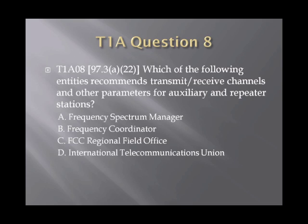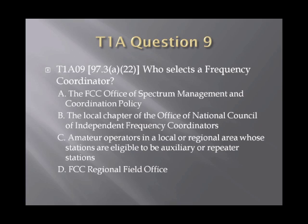Question 8. Which of the following entities recommends transmit-receive channels and other parameters for auxiliary and repeater stations? A. Frequency spectrum manager. B. Frequency coordinator. C. FCC regional field office. Or D. International Telecommunications Union. Question 9. Who selects a frequency coordinator? A. The FCC Office of Spectrum Management and Coordination Policy. B. The local chapter of the Office of National Council of Independent Frequency Coordinators. C. Amateur operators in a local or regional area whose stations are eligible to be auxiliary or repeater stations. Or D. FCC regional field office.